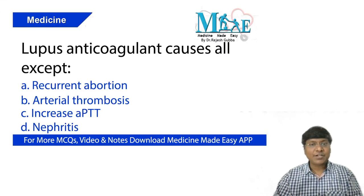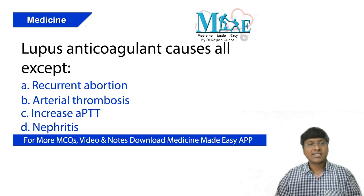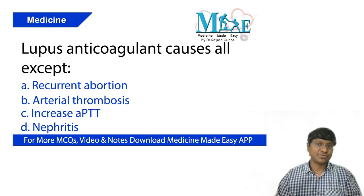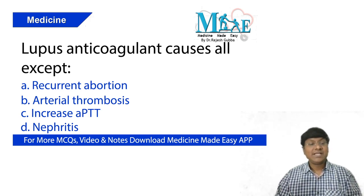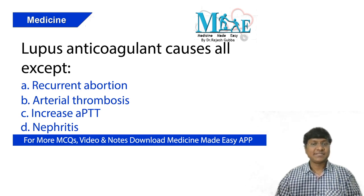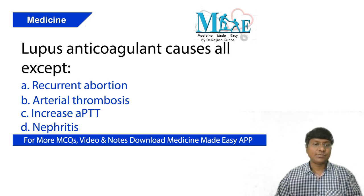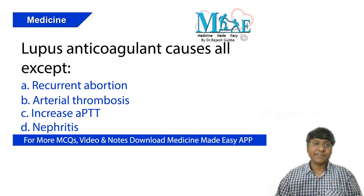As part of today's Daily Dose, the question is on the APLA syndrome — that is antiphospholipid antibody syndrome. The question is: lupus anticoagulant causes all except — the options are recurrent abortions, arterial thrombosis, increased APTT, and nephritis.